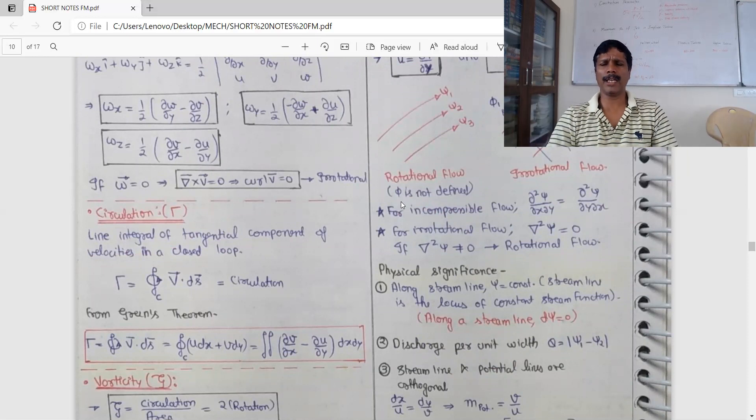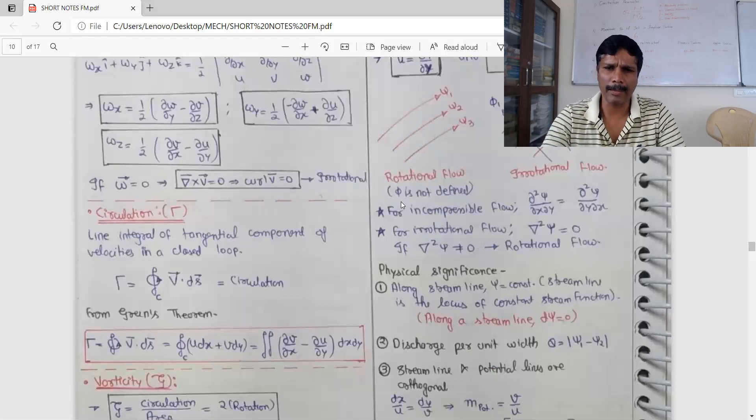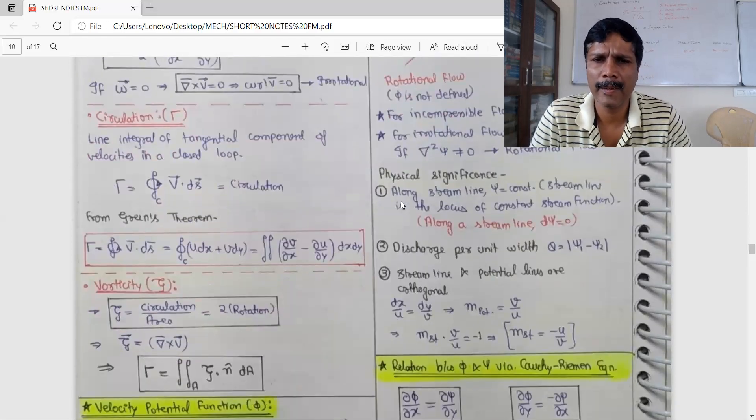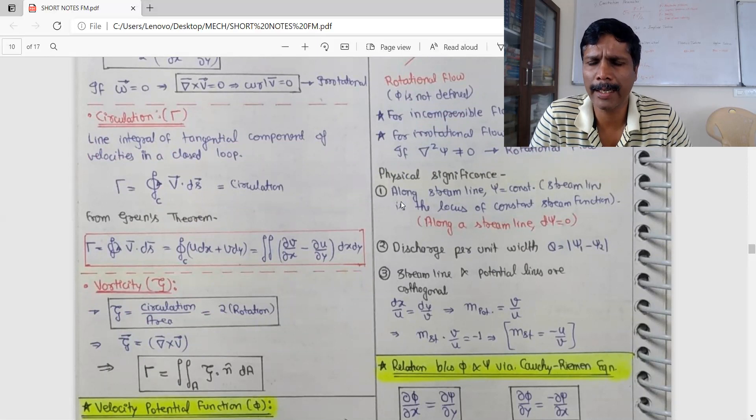Streamline and potential line cut orthogonal to each other. Streamline is v by u, slope of potential line is minus u by v. Product is minus 1.